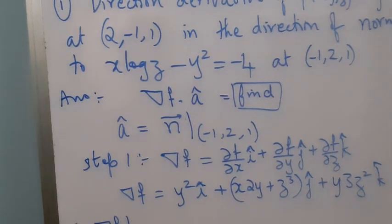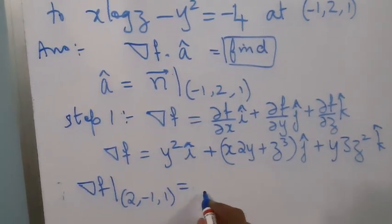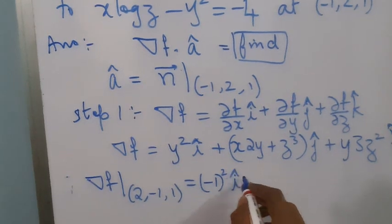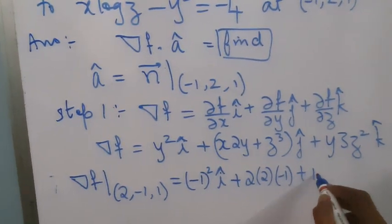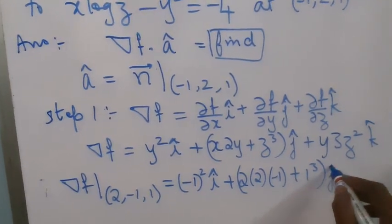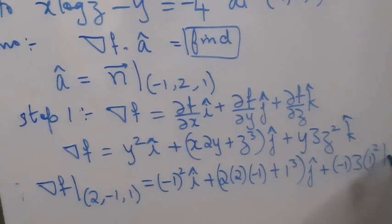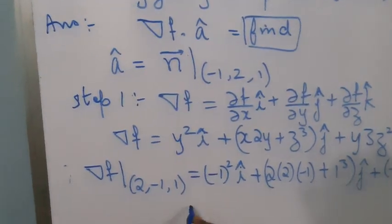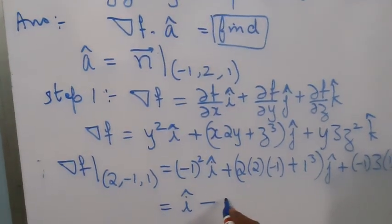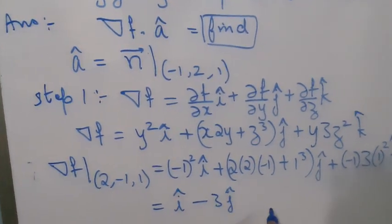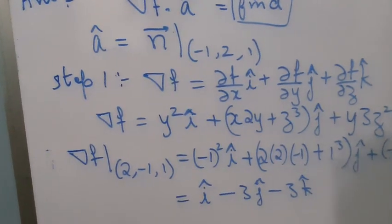We require the directional derivative at (2, -1, 1), so we evaluate grad f at (2, -1, 1): that gives (-1)²î + (2·2·(-1) + 1³)ĵ + ((-1)·3·1²)k̂, which simplifies to î - 3ĵ - 3k̂.